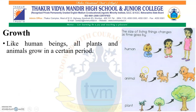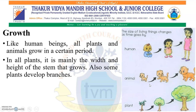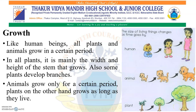As shown in the picture, like human beings, all plants and animals also grow in a certain period. In all plants, it is mainly the width and height of the stem that grows, and also some plants develop branches. Animals grow only for a certain period, whereas plants, on the other hand, grow as long as they live.